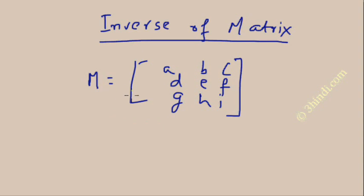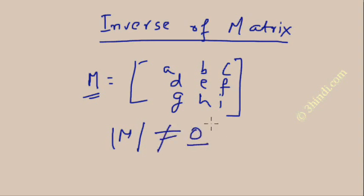First of all, you can calculate the inverse only for a matrix which is square in nature. The first condition is M should be a square matrix, and the second condition is that the determinant value of M should not be equal to 0. Then you can find the inverse of the matrix, and the notation for the inverse is M to the power minus 1.